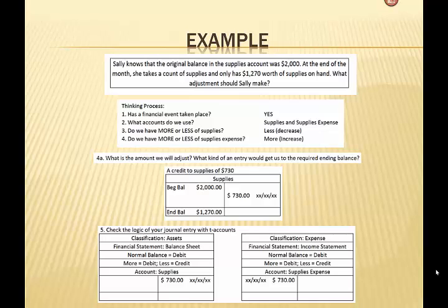Now, what is our journal entry? Let's check our logic here. What we will do is credit the supplies account for $730, because less of an asset means we have to credit it. However, we will debit supplies expense, because we have more of that. And more supplies expense, because it has a normal balance of a debit, means we would debit that account. So, our journal entry balances.